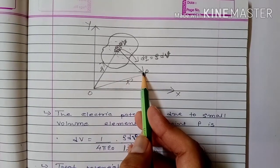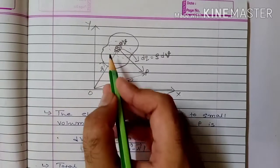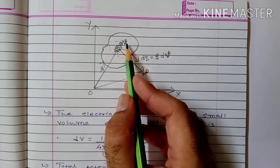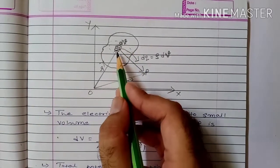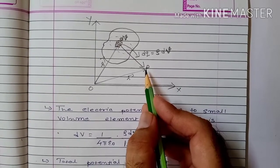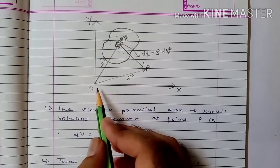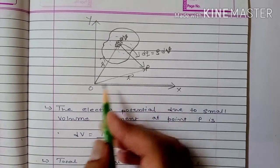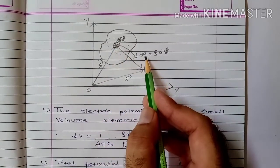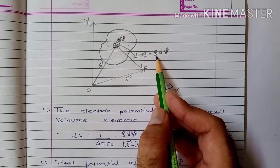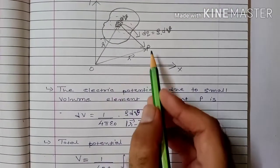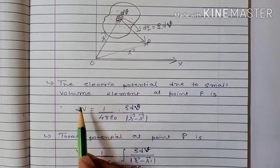Here I want to calculate electrostatic potential at point P due to volume charge distribution. We consider a small volume element having volume dV. This small volume element has position vector R' with respect to the origin, and point P has position vector R with respect to the origin. The charge contained in this small volume element is given by volume charge density ρ multiplied by volume dV.